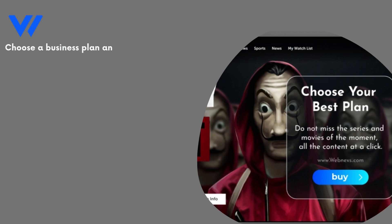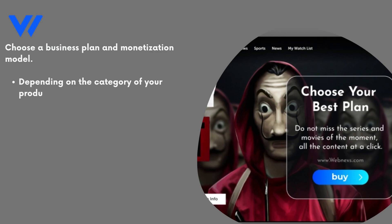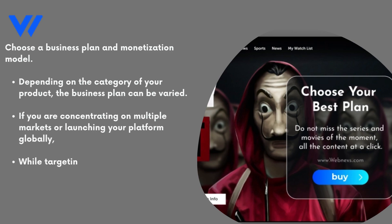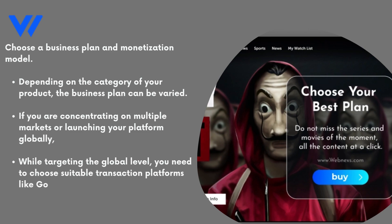Choose a business plan and monetization model. Depending on the category of your product, the business plan can be varied. If you are concentrating on multiple markets or launching your platform globally, you need to choose suitable transaction platforms like Google Pay, PayPal, MobileQuick, etc.